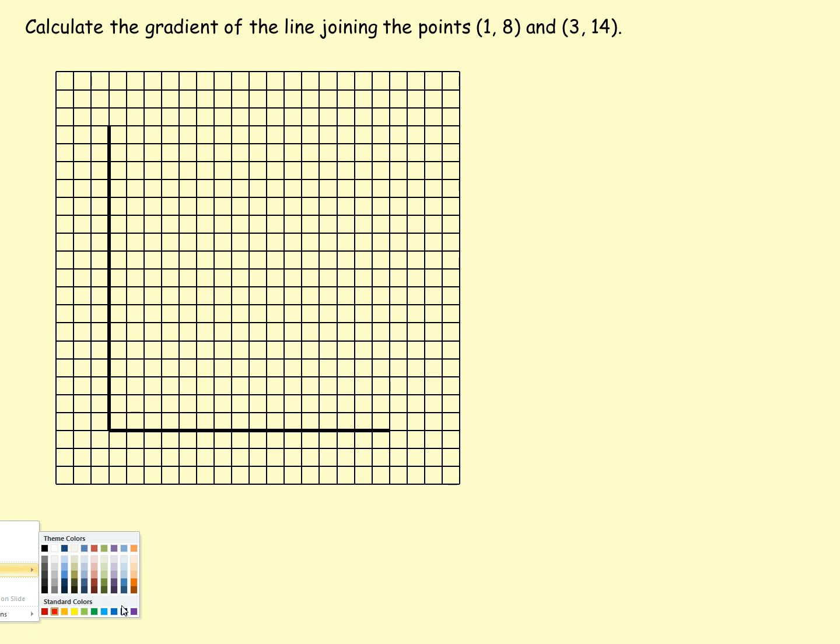So you can see the first thing I've done is drawn a set of axes here. Now what I'm going to do is first of all plot these points on. So 1, 8 means go across 1 and then up 8.